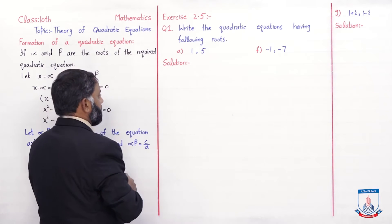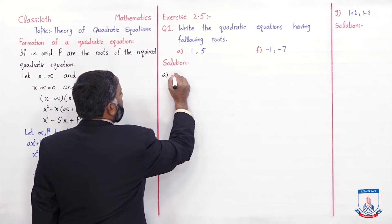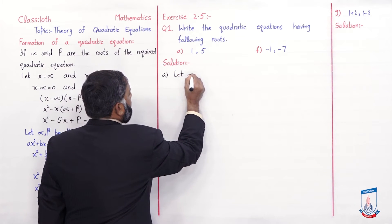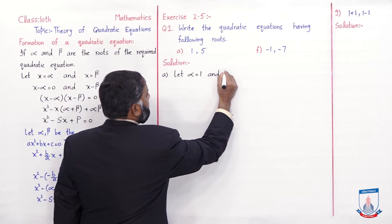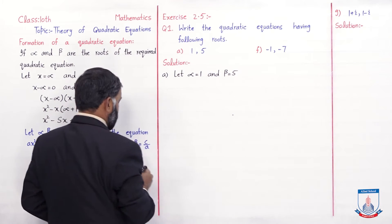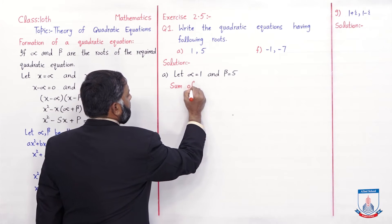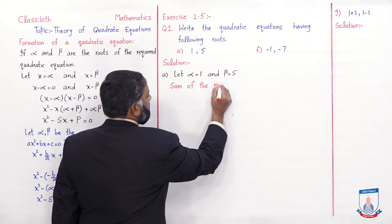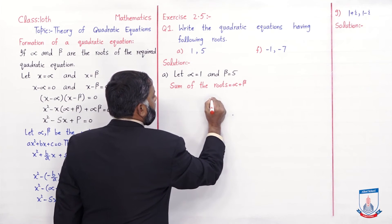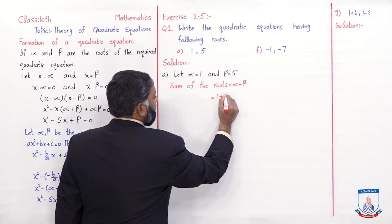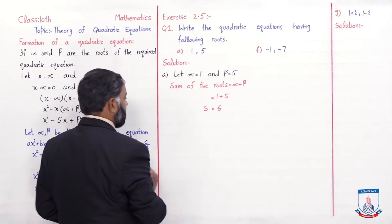I am doing parts A and F. In part A, we are given two roots and we have to form the quadratic equation. Let alpha = 1 and beta = 5. First we find the sum of the roots: alpha + beta = 1 + 5 = 6. The value of sum of roots is 6.